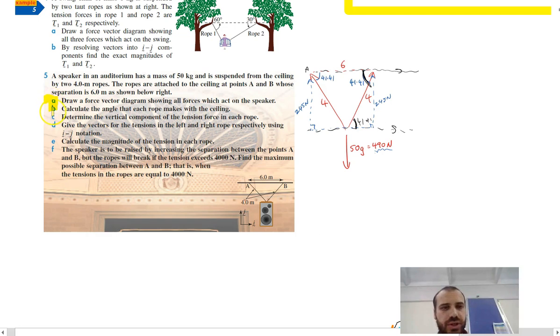They've also been able to determine the vertical component of the tension force in each rope because there was 400 newtons going down here, and the vertical component is going to be that divided by two because the tension is being split equally between the two ropes. The part that we were having trouble with is D, give the vectors for the tensions in the left and right rope respectively using I and J notation.